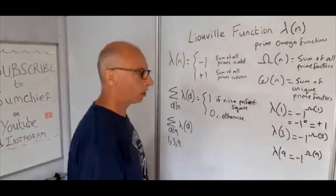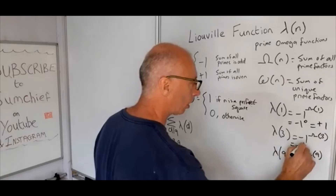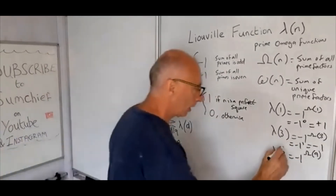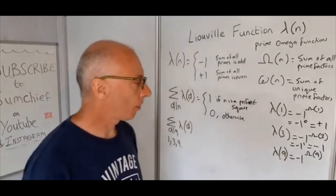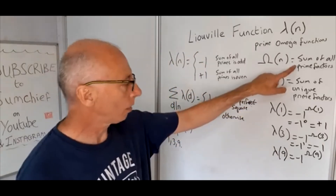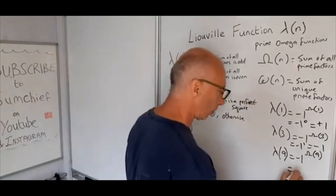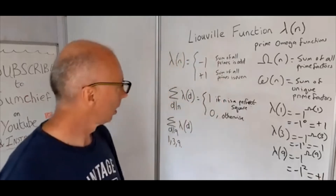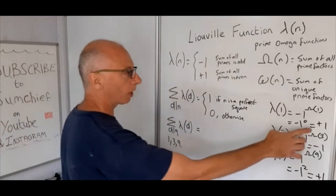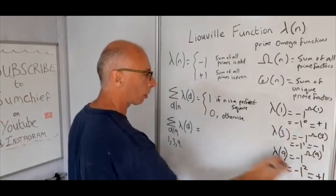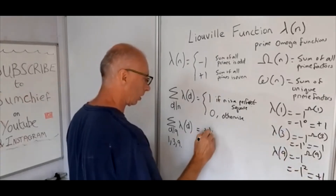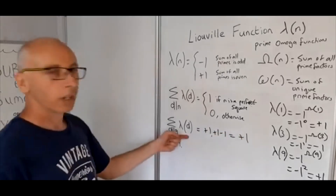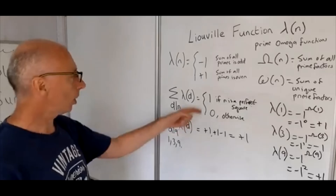For 3, it's just 1 prime factor, so λ(3) = (-1)^1 = -1. For 9, since 9 = 3², it has 2 prime factors, so λ(9) = (-1)² = +1. Adding them all up: +1, -1, +1, equals positive 1. That confirms the identity works for 9, which is a perfect square.